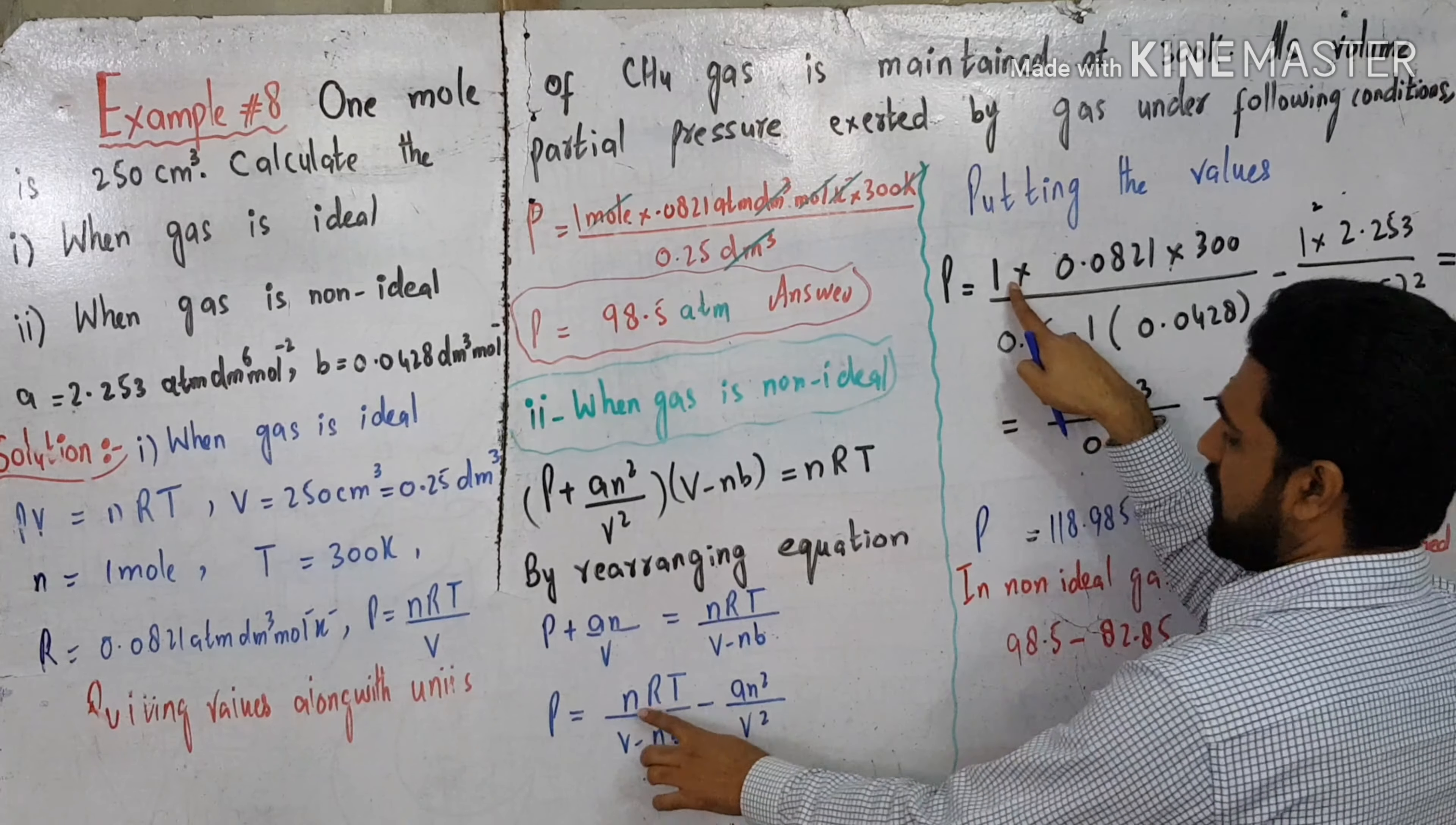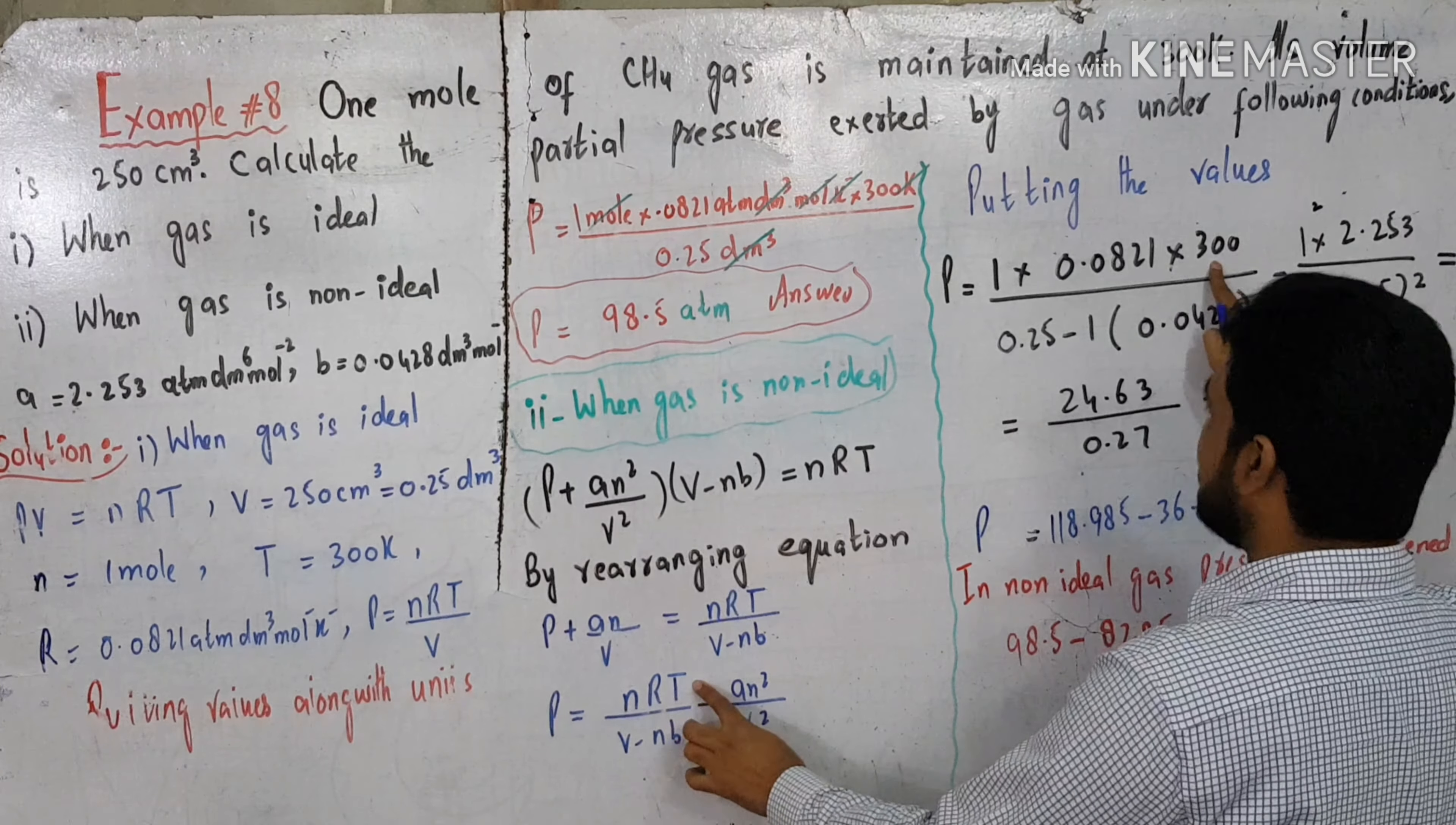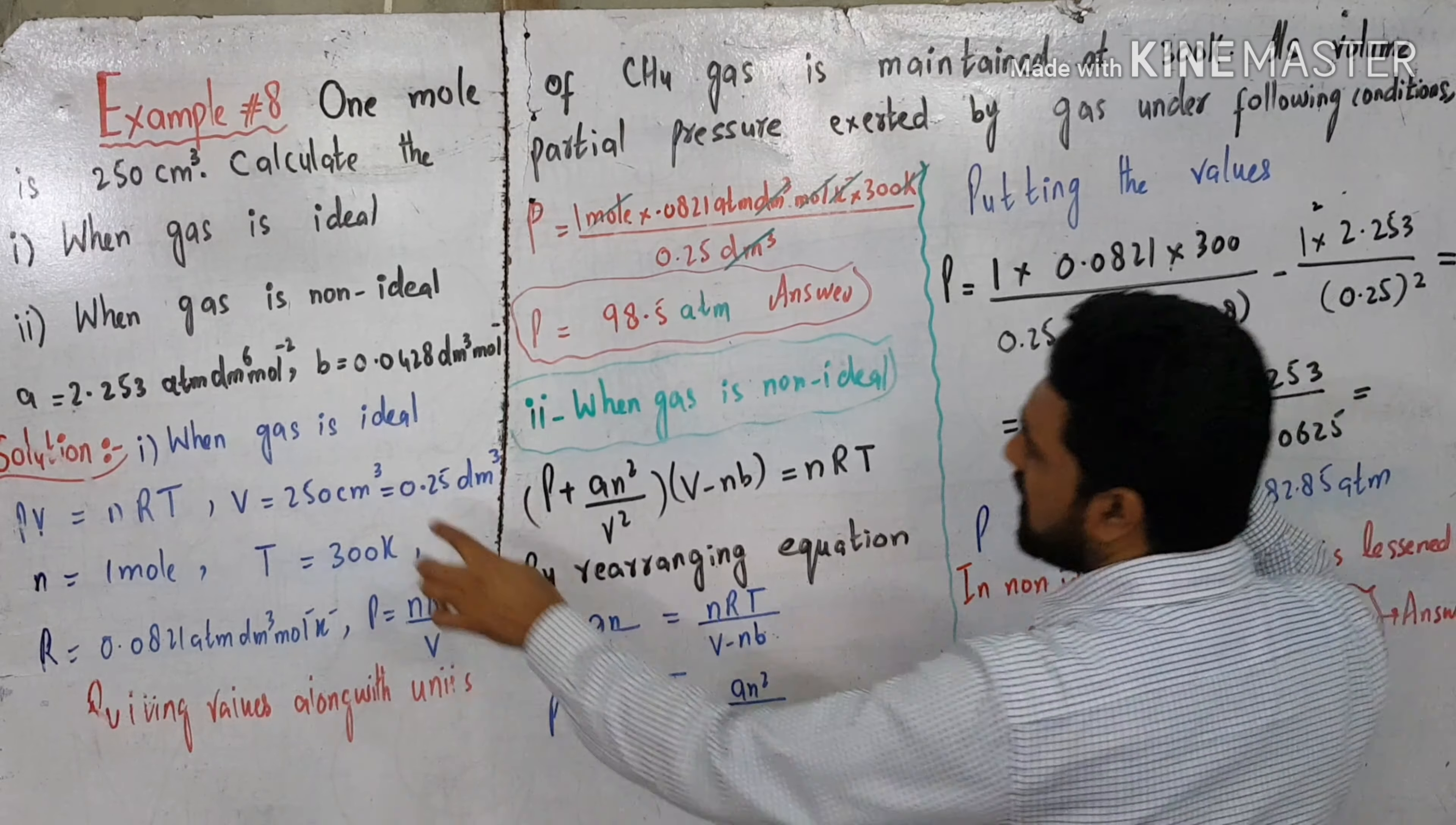Pressure equals: n is 1 mole, R is 0.0821 dm³ per mole per Kelvin, temperature is 300 Kelvin, V is 0.25, n is 1 mole, and B is given.